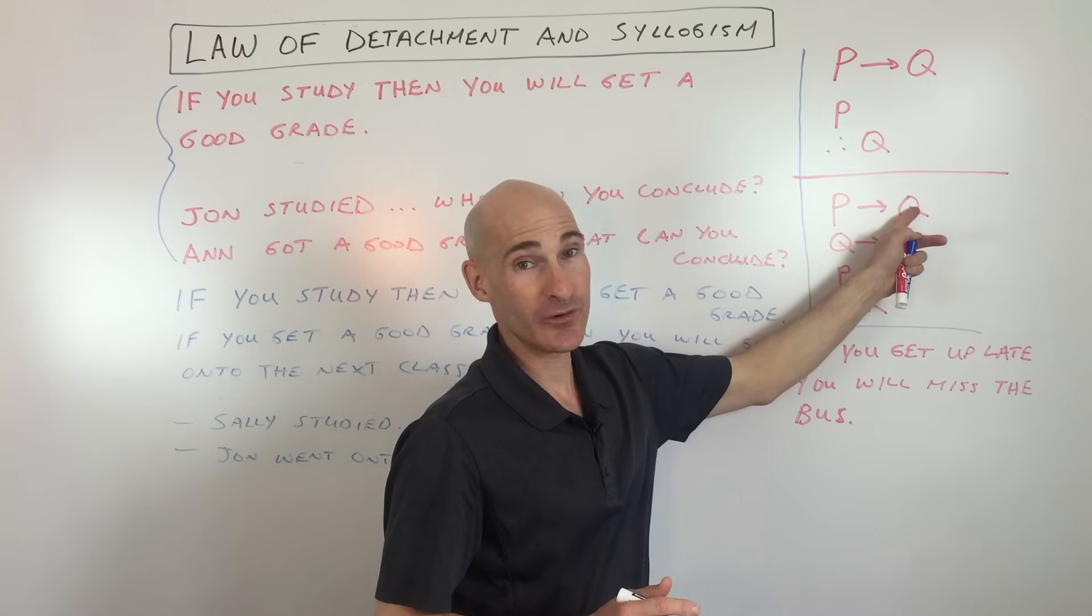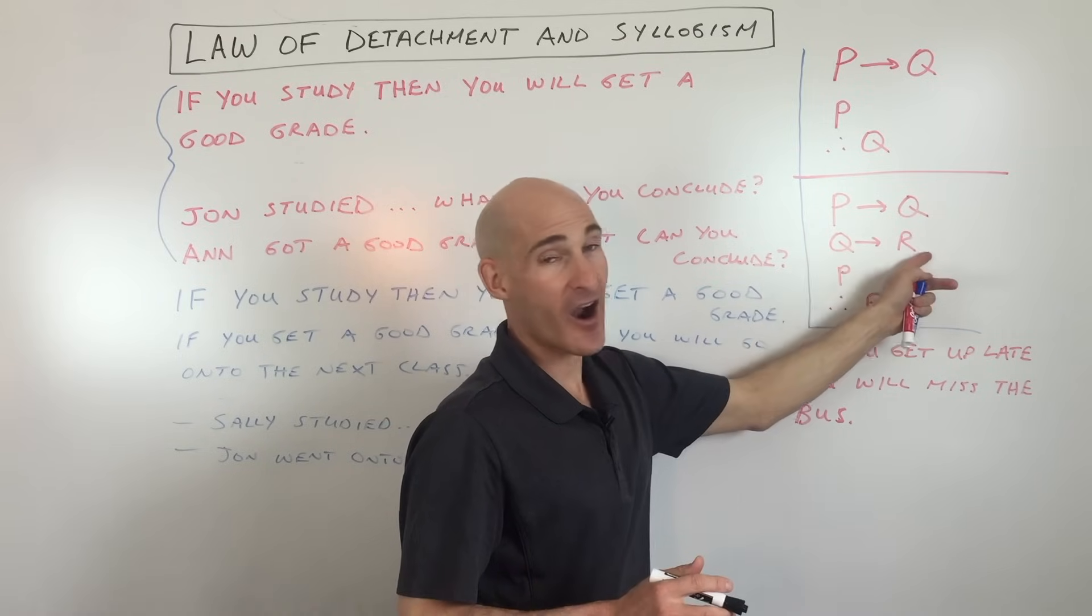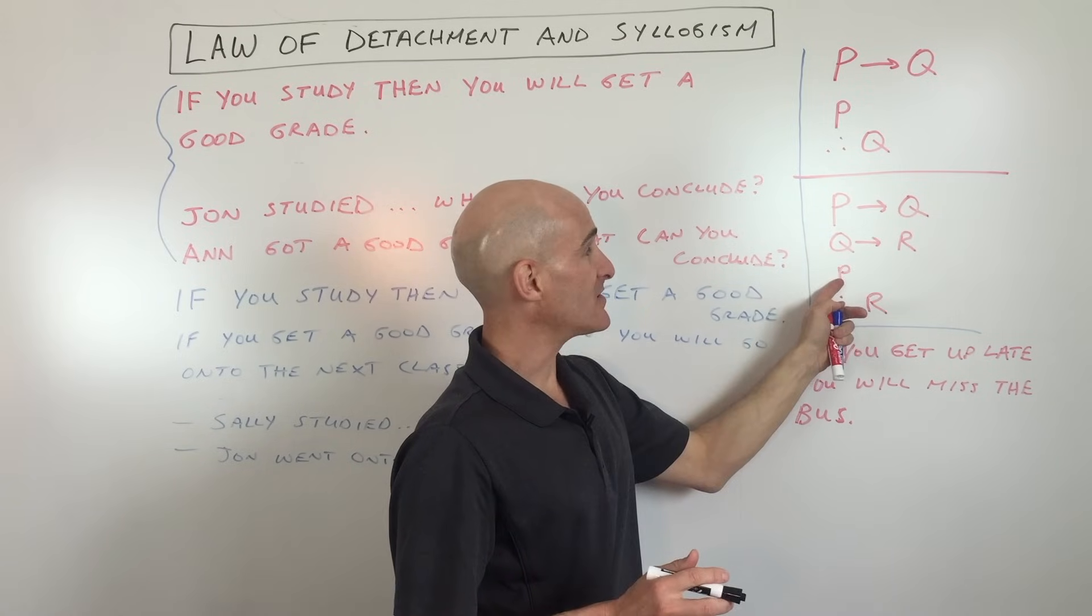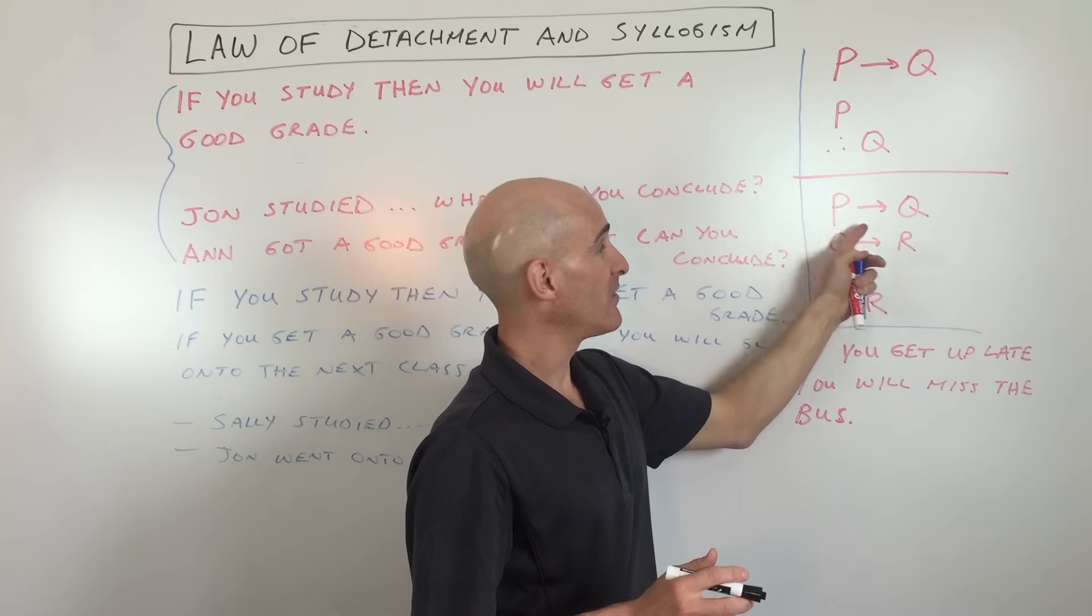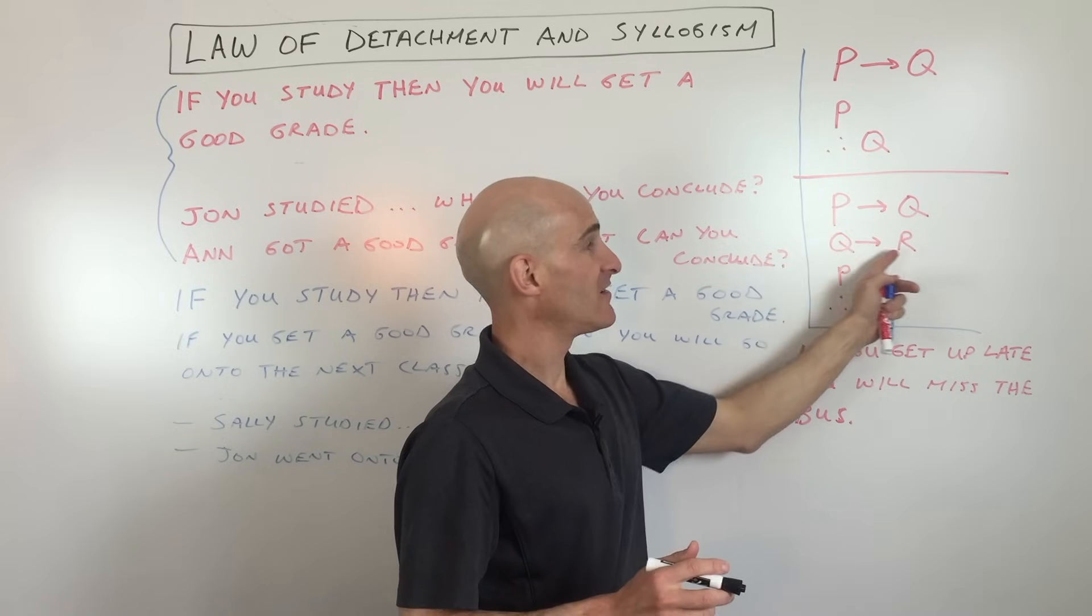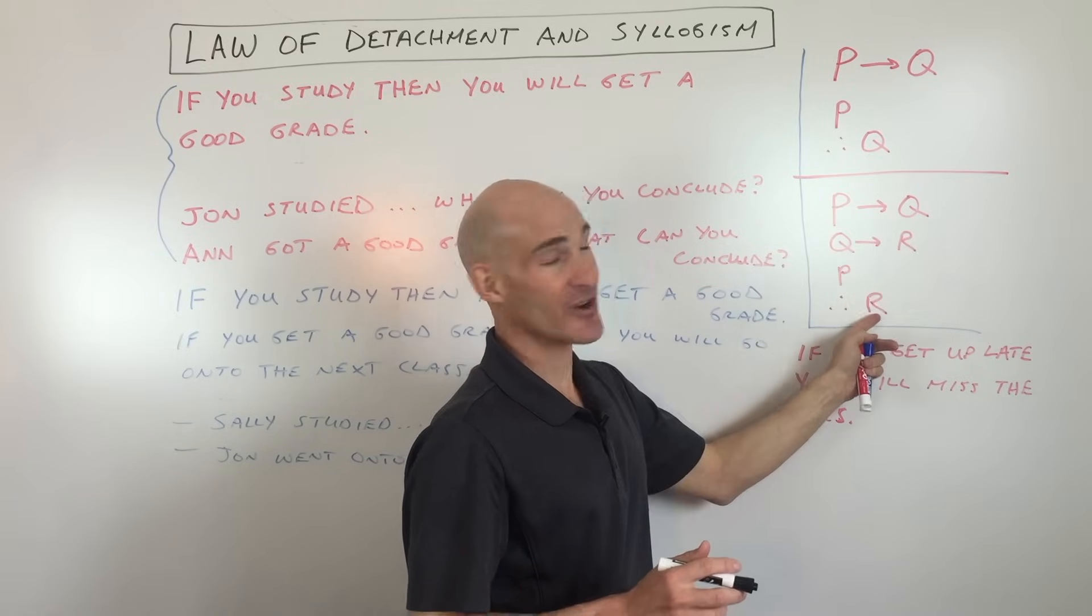If P, then Q. If Q, then R. If P happens, meaning this first item, then through this chain of events, R is going to occur.